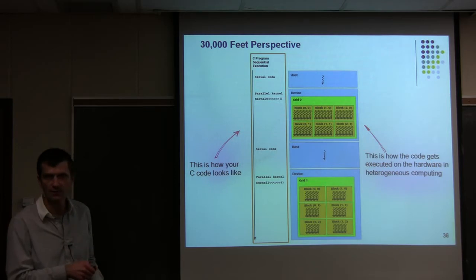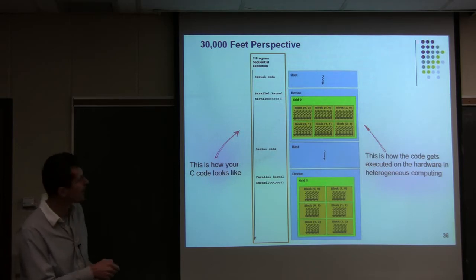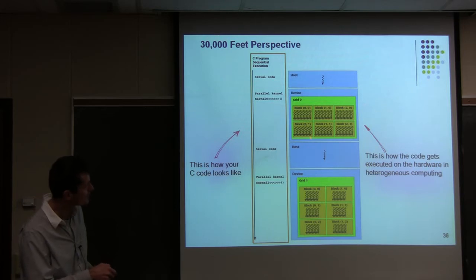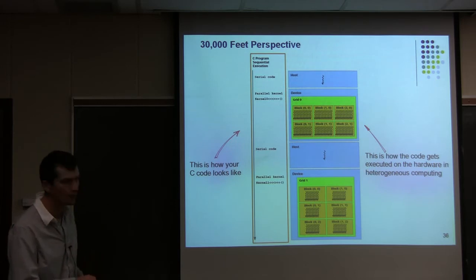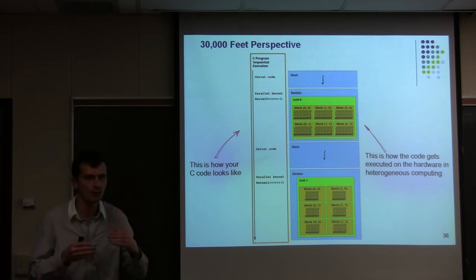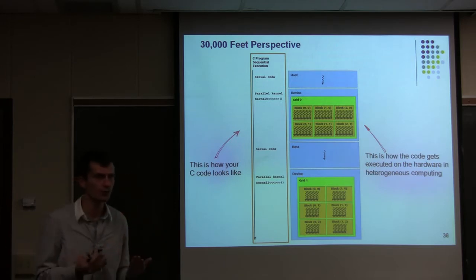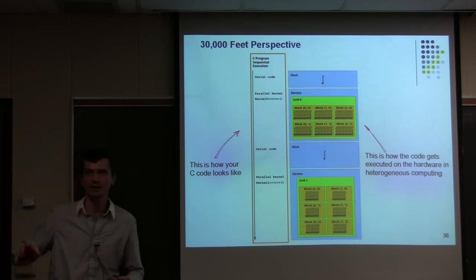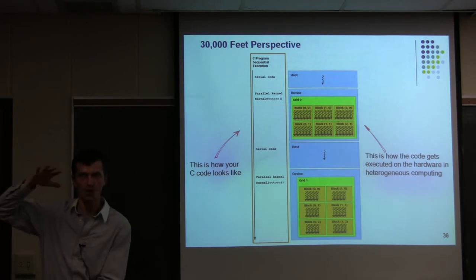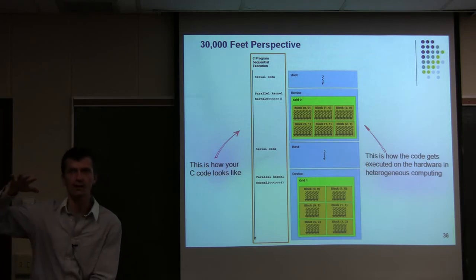Here is a diagram showing how things get executed. In this box is your C code. You have a bunch of serial code, and at some point you have a kernel launch. What happens is that the host executes, and all of a sudden the device is invoked with a certain number of blocks — block 0, block 1, block 2, and so on. Each block has a certain number of threads.